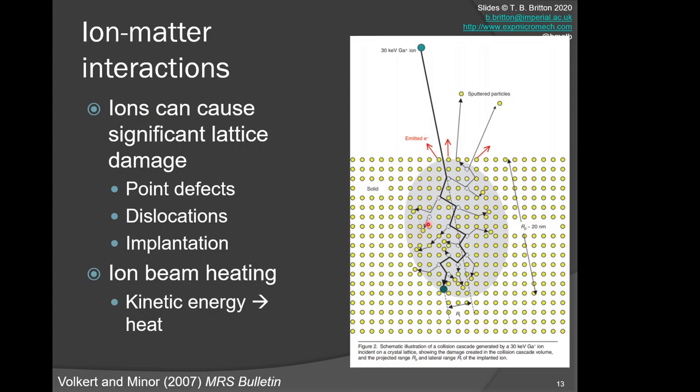You can create effectively vacancies and point defects—self-interstitials, Frenkel pair defects in the material. The distance that this travels is related to the Z number, the orientation, and the energy and size of the primary ion. That's important; we'll discuss that a bit later.